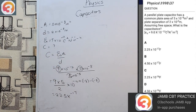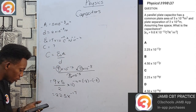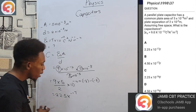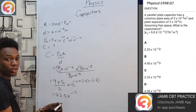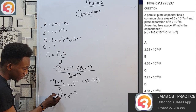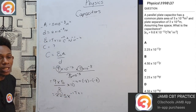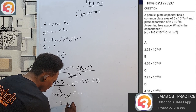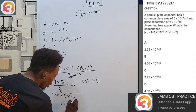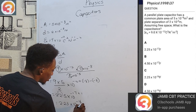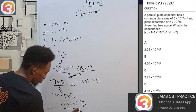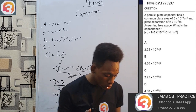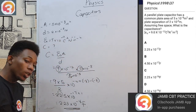Be careful: in standard form the decimal point goes after the first digit, so 22.5 × 10⁻¹⁷ becomes 2.25 × 10⁻¹⁶. The answer is option C. Don't make the mistake of rushing and choosing option A, which would be 22.5 × 10⁻¹⁷.